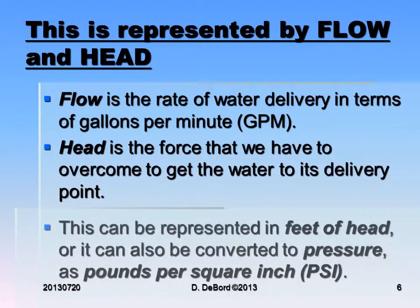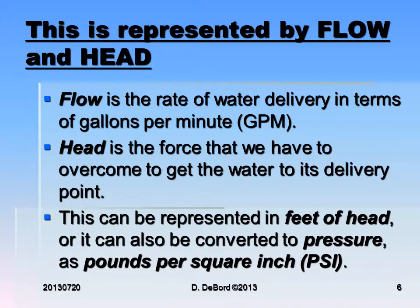The output is represented by both flow and head. Flow is the rate of water delivery, and here we're talking about GPM, gallons per minute. Head is the force that we have to overcome to get the water to its delivery point, measured in feet of head. This can also be converted to pressure as pounds per square inch, or you could use metric equivalents.